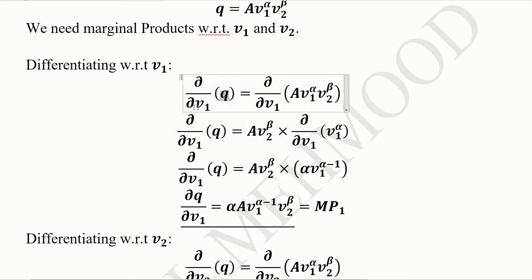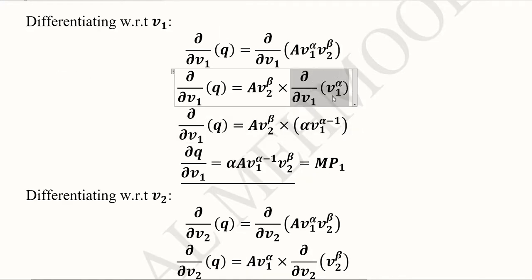The production function getting differentiated with respect to V1 gives us this term on the right-hand side. V2 term and A term should come out as constants, outside the derivative. You can easily calculate the derivative of this term, which is an application of the power rule of differentiation.